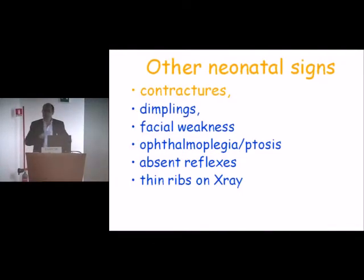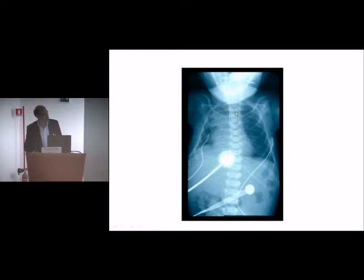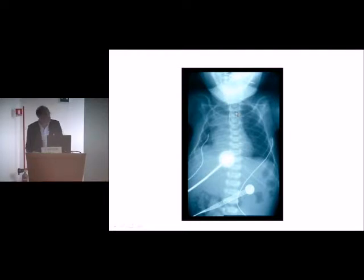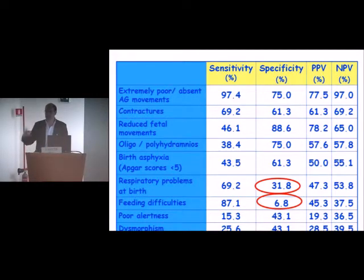Other signs include small dimplings at joint level — these are a sign that there were few movements in utero. If the respiratory muscles are not moving well in utero, the ribs will be very thin on a neonatal X-ray. So look at the ribs — if this goes together with weakness, contractures, and polyhydramnios, it's another sign you are dealing with a peripheral problem. Attention should be paid to the fact that respiratory and feeding difficulties are frequent but not very specific, as they can also be found with central nervous system involvement.